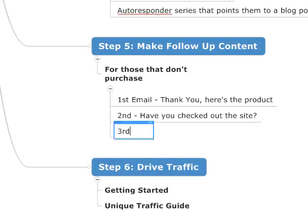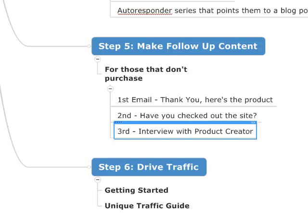We don't want to pester them — we also want to build a relationship. So for the third email, if possible, I would get an interview with the product creator, an audio interview. Say in the email: hey, I just got an interview with the guy who made Fat Loss for Idiots. He reveals some free secrets on how you can lose weight using this system. In this 30-minute audio, you're going to get something valuable. Make sure you always tell them what they're going to get out of it.